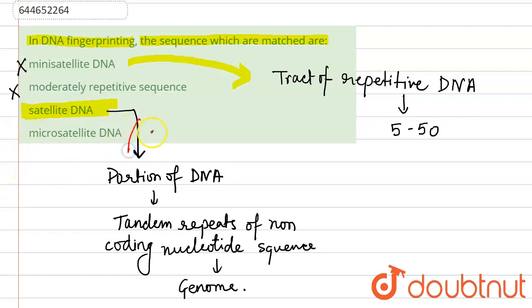Microsatellite is another name of minisatellite, so it is also a tract of repetitive DNA which is repeated 5 to 50 times and cannot be used in DNA fingerprinting. So statement 4, microsatellite, is also not correct. So the correct answer is satellite DNA.